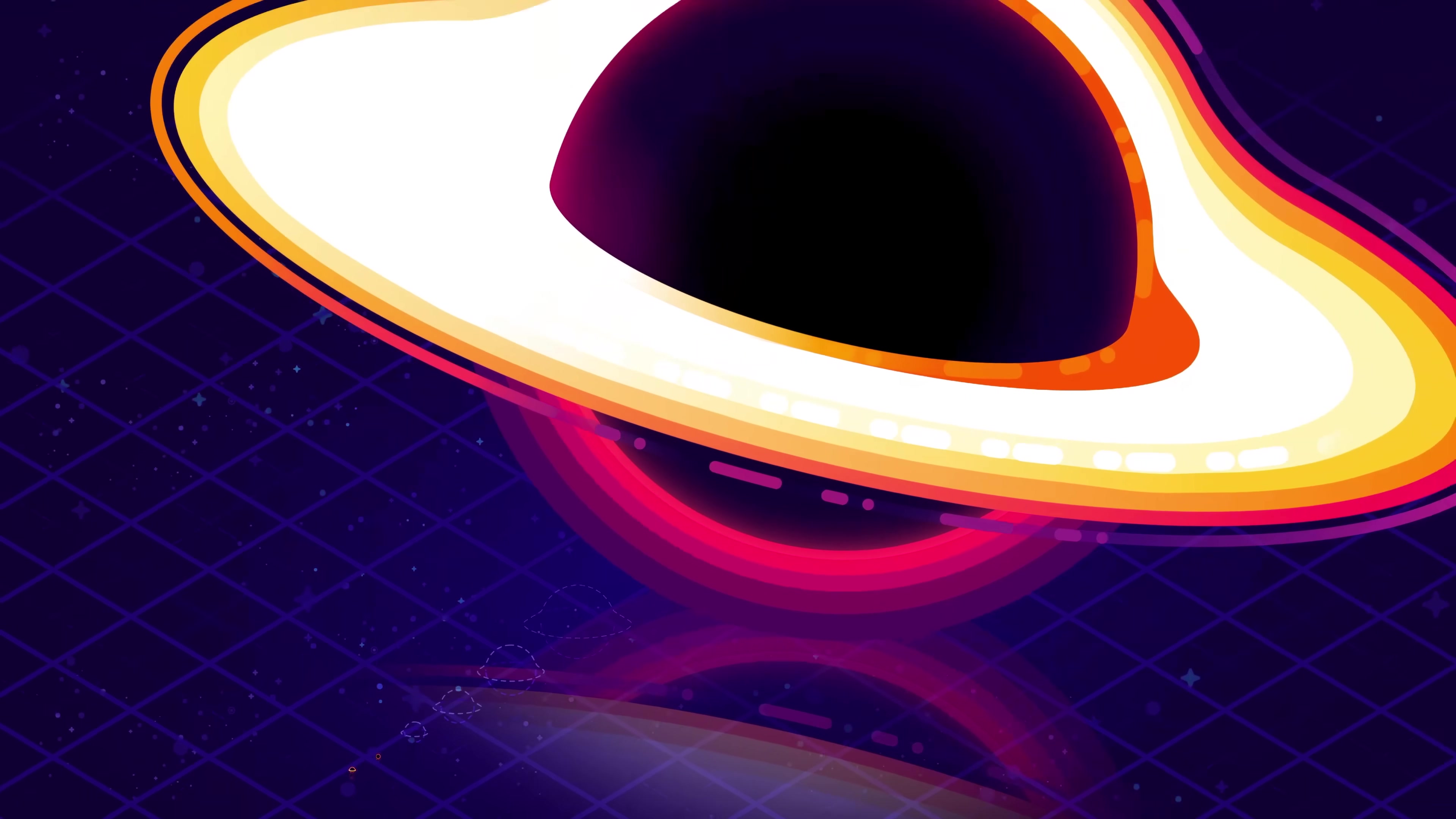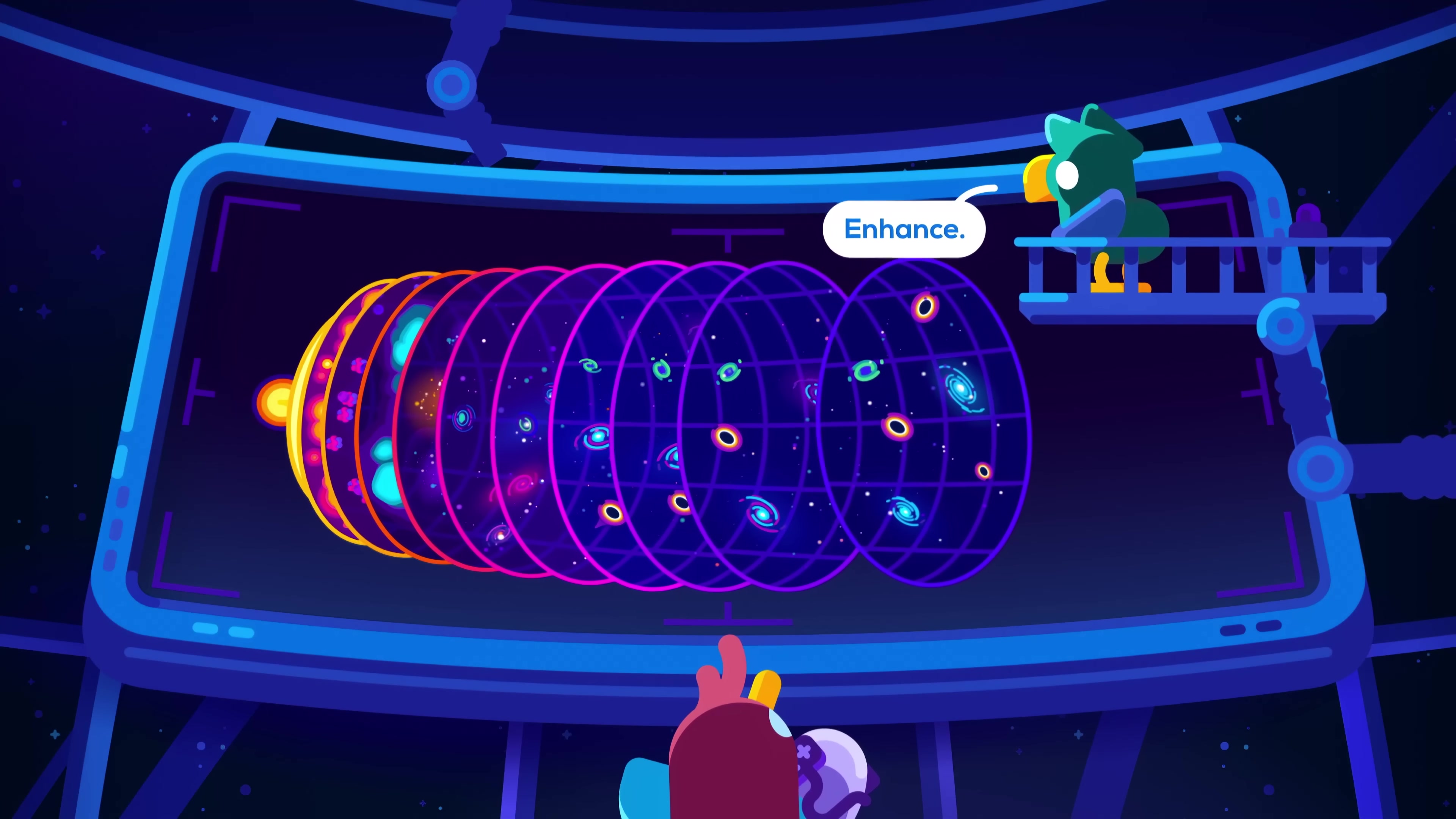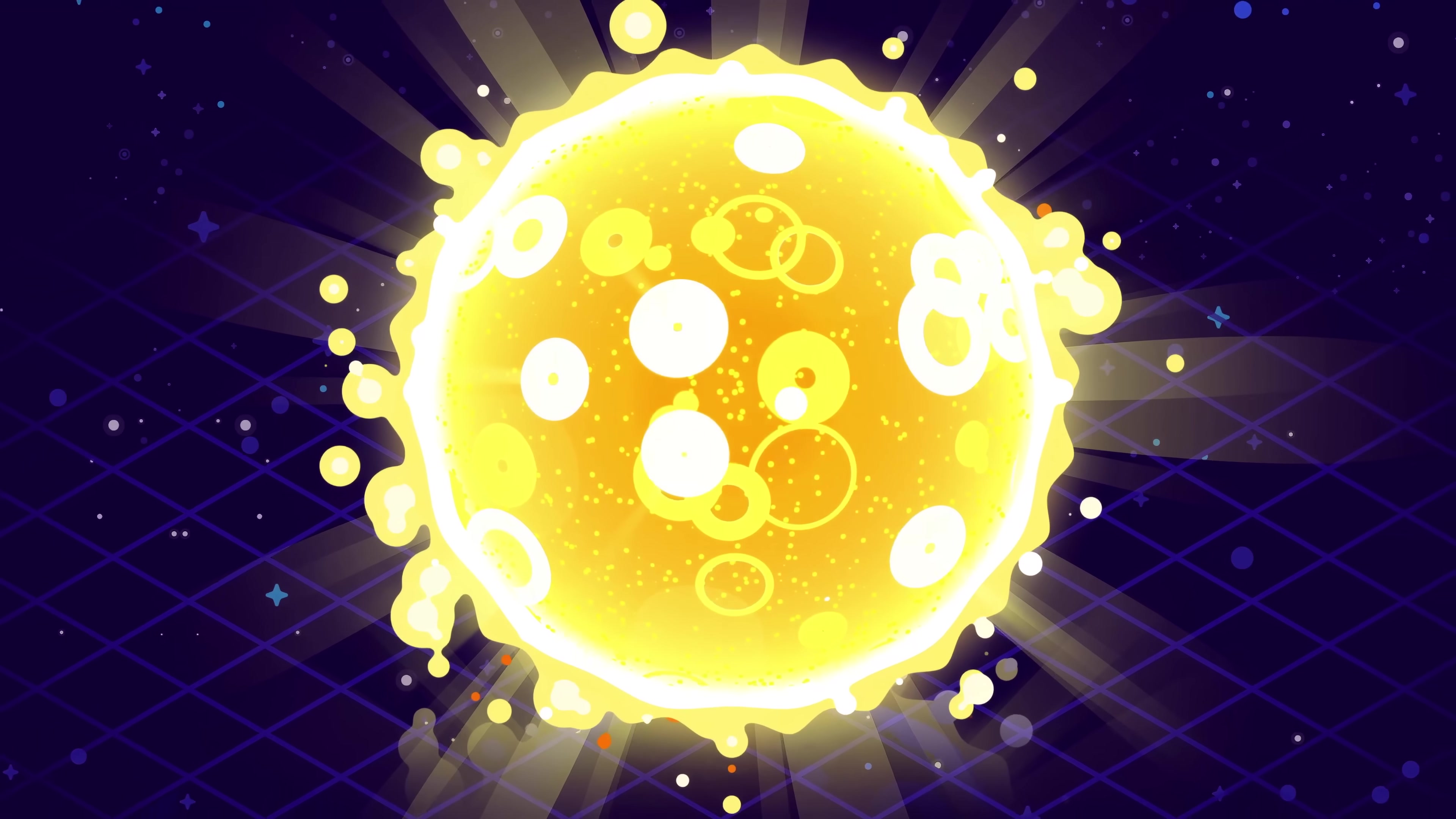But for the most massive black holes, this process is not fast enough to explain their existence today. The universe is simply not old enough for these supermassive black holes to have formed by eating stars and merging with each other. Something else must have happened. To explain how we got the largest black holes in the universe, we might need the largest stars that ever existed.